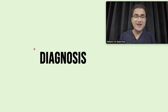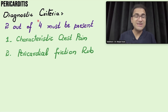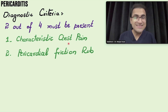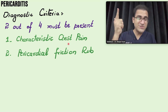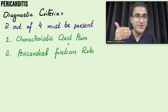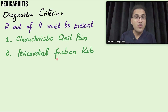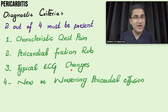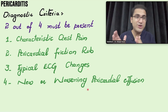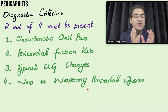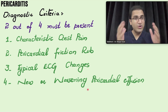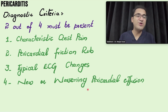For the diagnosis of acute pericarditis, a diagnostic criteria must be fulfilled — two out of four criteria must be present: (1) characteristic pleuritic chest pain, (2) pericardial friction rub on auscultation, (3) typical ECG findings, and (4) new or worsening pericardial effusion. Pericardial effusion is a complication of acute pericarditis, where inflammation produces exudative fluid that accumulates around the heart.